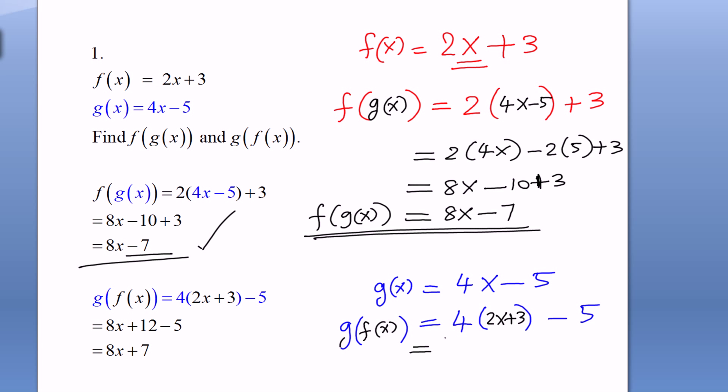So what do we get? 4 times 2x plus 4 times 3 minus 5. This is nothing but 8x + 12 - 5. And that is 8x + 7. This is George Matthews signing off. Good luck.